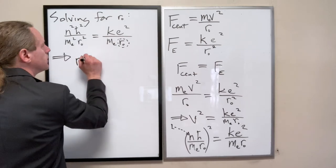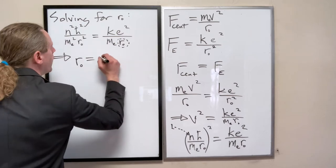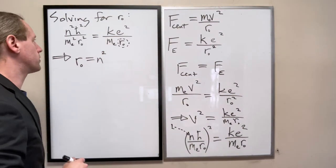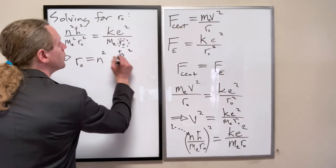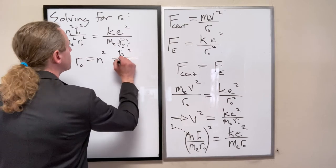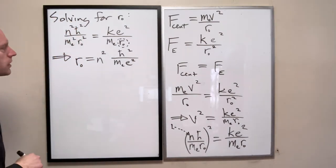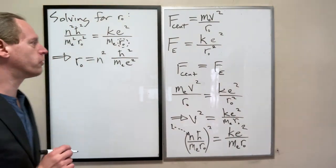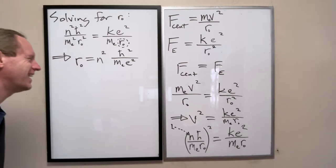We'll go ahead and just solve for that variable R0, and I'm not going to go through the steps. R0 equals, and I'm going to put the N squared out in front, N squared and then H bar squared over ME times E squared. Can I get a confirmation? I think you forgot the K in the denominator. Thank you.